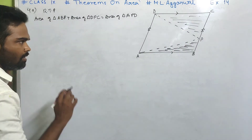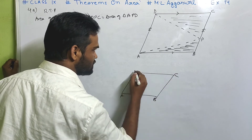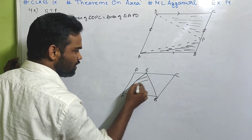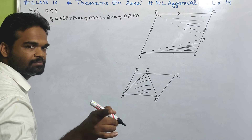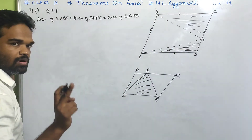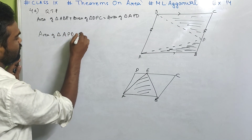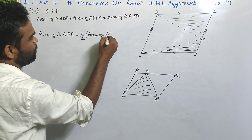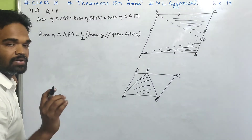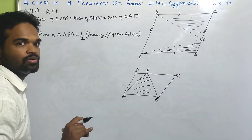Remember this theorem: if you have a parallelogram and you draw a triangle with the same base and between the same parallels, the area of the triangle is half the area of the parallelogram. For parallelogram ABCD, with AD as the base, triangle APD is drawn between the same parallels. So area of triangle APD equals half the area of parallelogram ABCD.